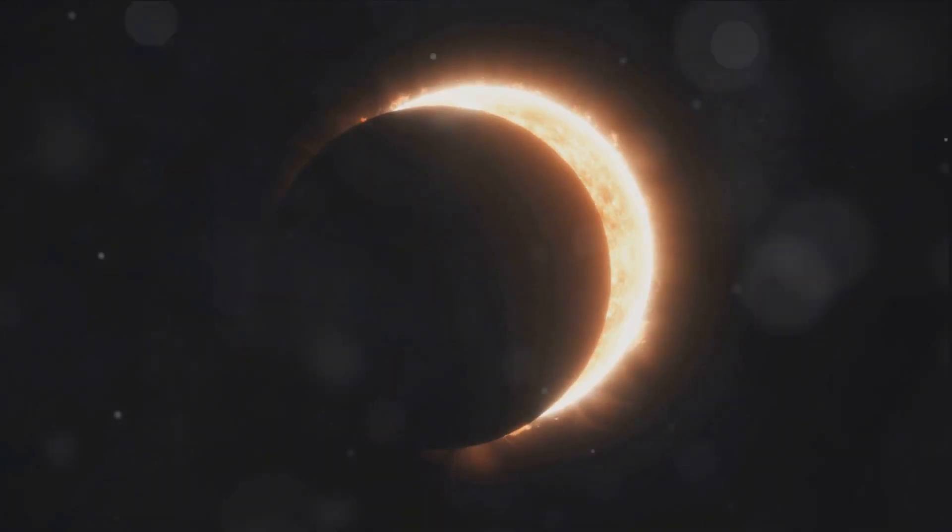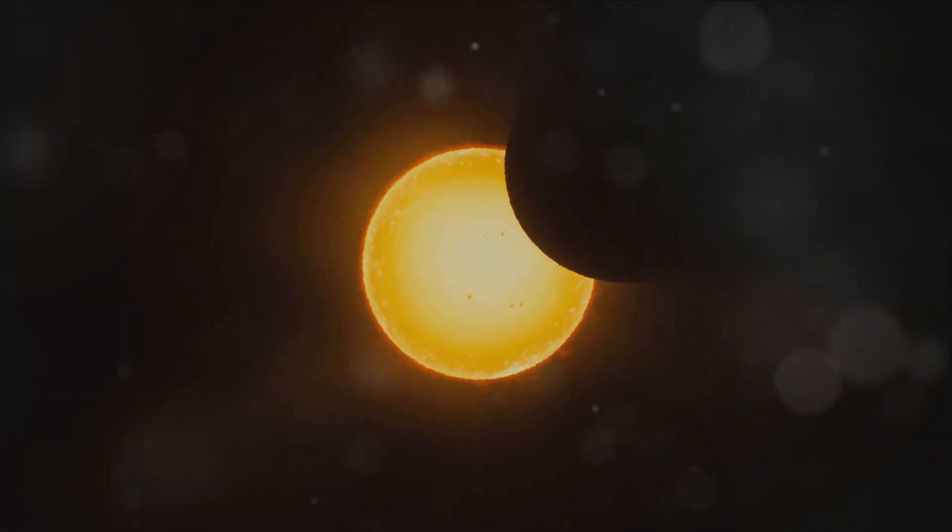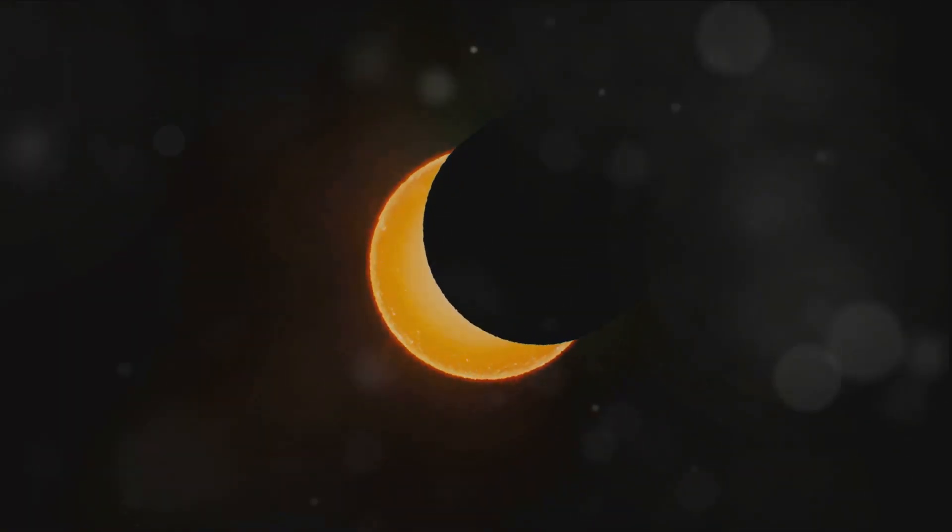A partial solar eclipse occurs when only a portion of the Sun is obscured by the Moon. An annular eclipse happens when the Moon covers the center of the Sun, leaving a ring of sunlight visible around the edges.